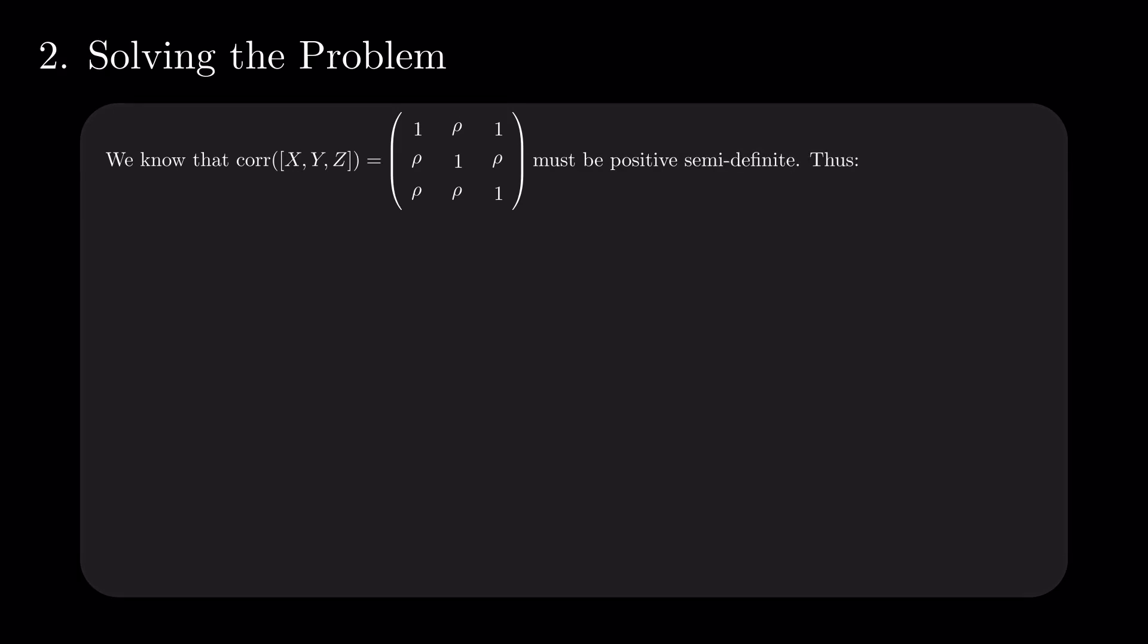Recursively, eliminate trailing rows and columns to get the principal leading minors. The first is 1, clearly non-negative. The second is 1 minus rho squared, which is non-negative for values of rho between minus 1 and 1. This condition on the correlation is already satisfied due to the previously mentioned constraints.